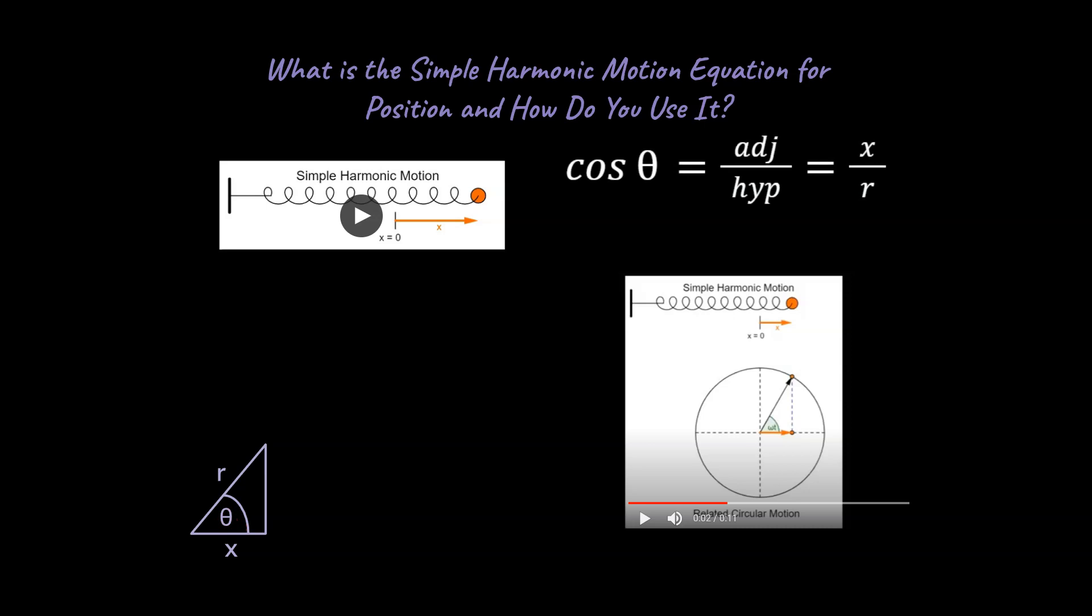So you could say, well, let's just go ahead and use cosine and think about what that would be in terms of x and r. And you would say, well, let's just isolate for x. If we do that, we end up with x is equal to r cosine theta.